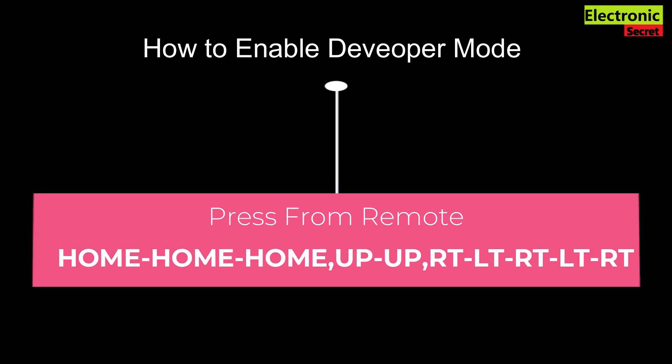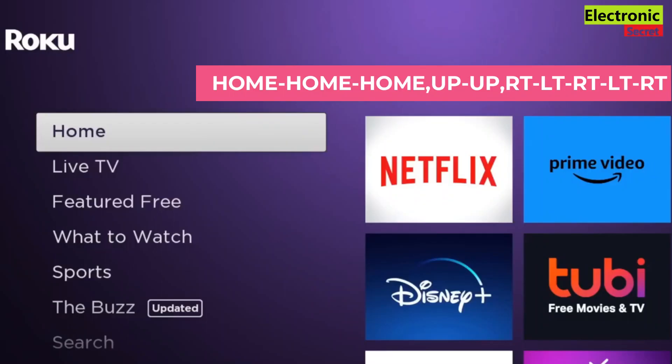Now I will show you how to enable developer mode. You have to press from the remote these keys: Home, Home, Home, Up, Up, Right, Left, Right, Left, Right.